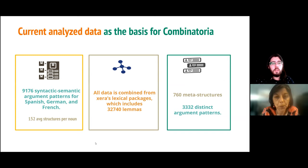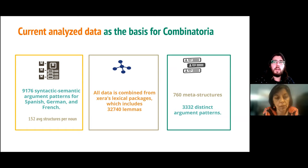This workflow has produced, on average, 152 structures for each of the nouns selected, over 32,000 distinct lemmas, and over 3,000 distinct argument patterns.